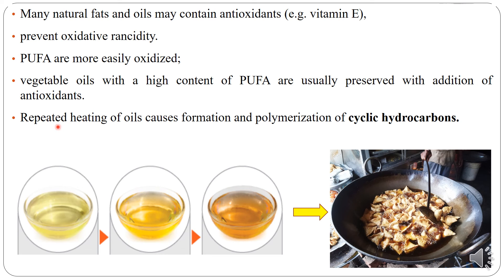However, when we repeatedly heat oil, this causes the formation and polymerization of cyclic hydrocarbons. Fresh oil can progressively darken from slightly heated to overheated through several rounds of frying — for example, frying bhajiyas or samosas by street vendors throughout the day. From morning to evening, by repeated heating, fresh oil can become very dark. These are examples of rancidity.